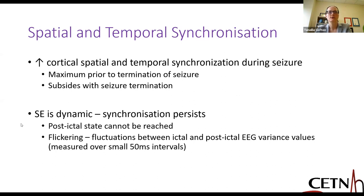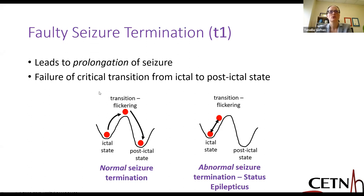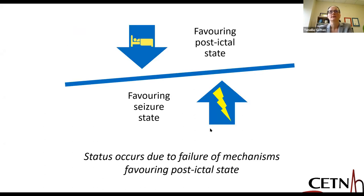Status epilepticus on EEG is quite dynamic, and this post-ictal state can't be reached. The EEG goes through a state these researchers termed 'flickering' — fluctuations between ictal and post-ictal EEG variants over very small 50-millisecond intervals. T1 is really a time at which we have faulty seizure termination, and we then get prolonged seizures and failure of that critical transition from the ictal to post-ictal state. In abnormal seizure termination, this threshold just can't be reached.